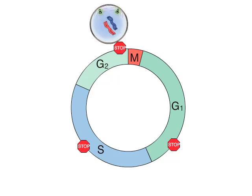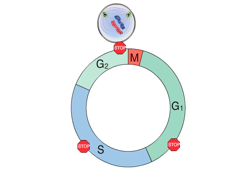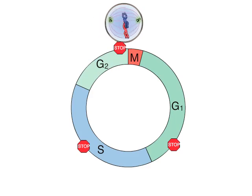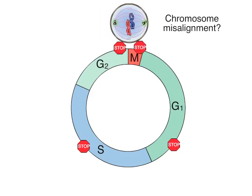Another checkpoint called the spindle assembly checkpoint arrests mitosis if the chromosomes are not properly aligned on the mitotic spindle